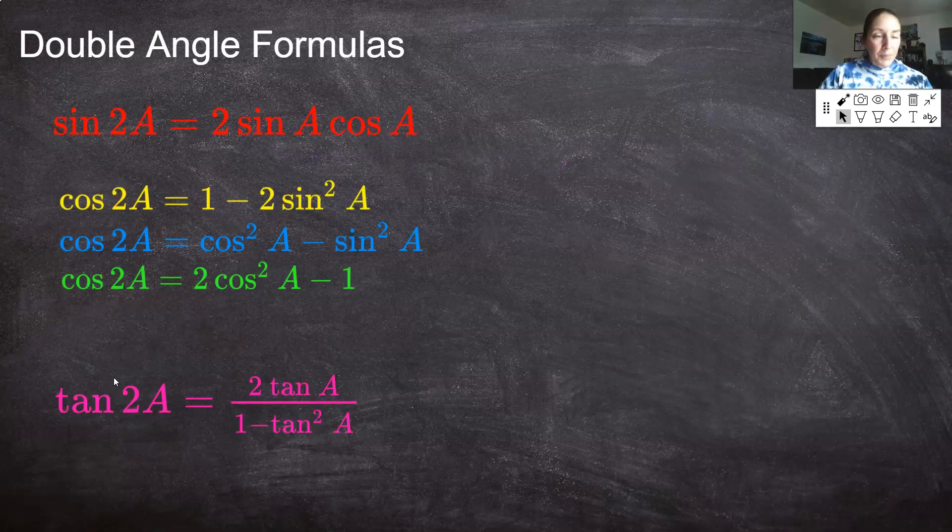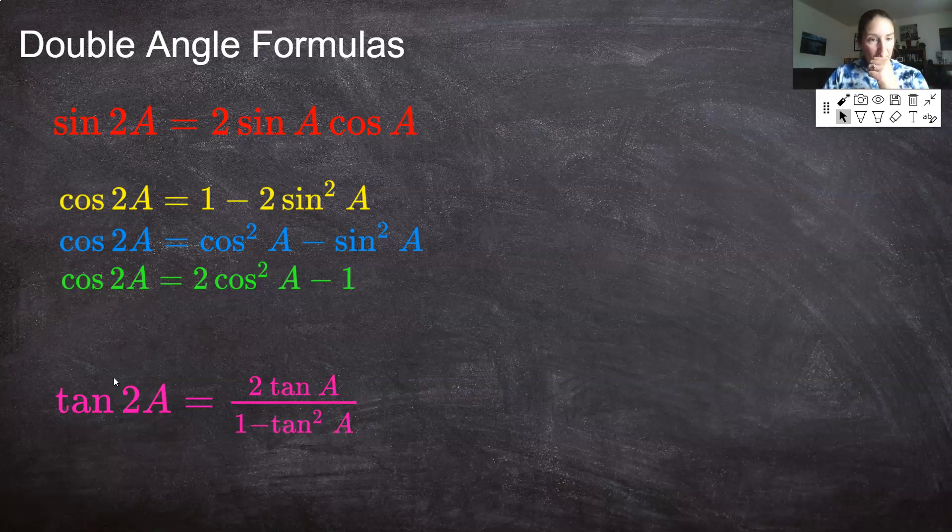So here they are. Sine of 2A: 2 sine A cosine A. This is probably the easiest one and best one. Sine of 2A - you have some flexibility and some dealer's choice. Depending on what's going to be easiest for you, there's three interpretations of cosine of 2A. And use the one that is most convenient for you to use at the time. You'll probably bounce around between all three of these. It really just depends what's the most efficient to use here. And then tangent of 2A: 2 tan A over 1 minus tangent squared A.